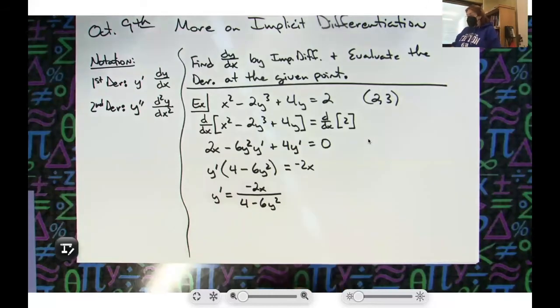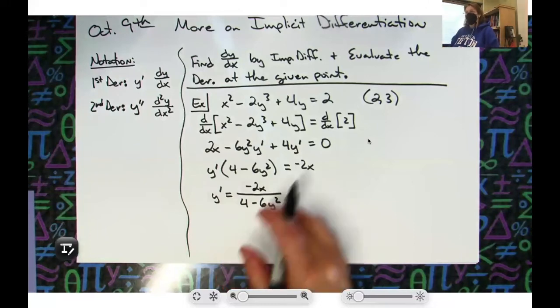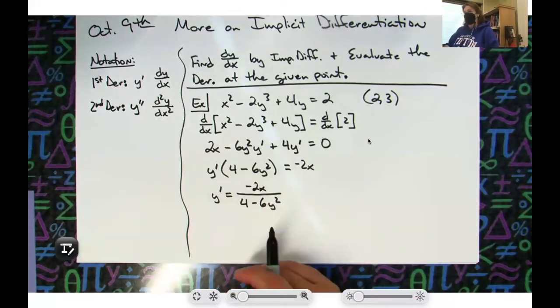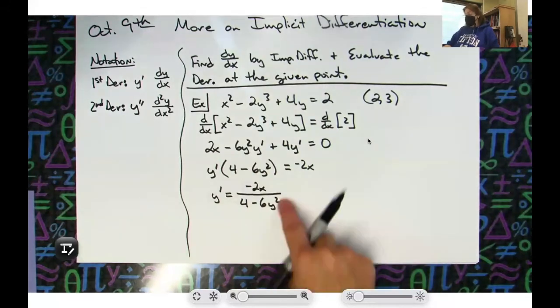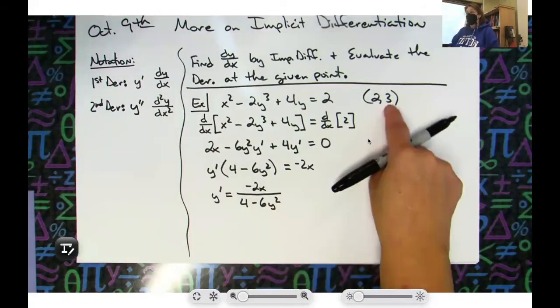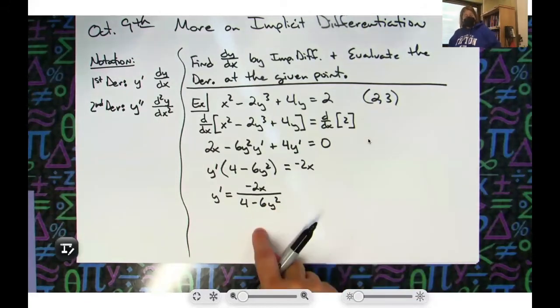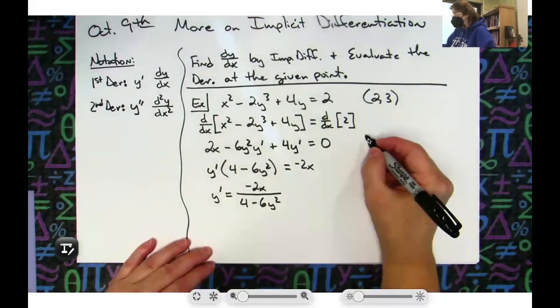Now technically if you wanted to reduce that, couldn't I take out like a negative 2 on the bottom? I could take out 2 on the bottom, I could simplify. But since the point of this question is not really to calculate the derivative - the point of this is to calculate the derivative and evaluate it at a given point - I can honestly stop at this point and not screw up any farther in my simplifying and just directly go into plugging that in. So let's come up here - evaluate at the point (2,3).